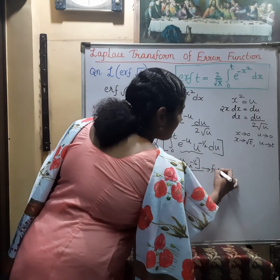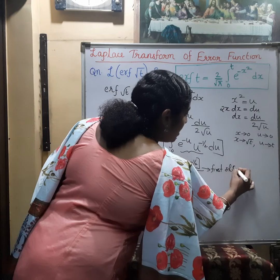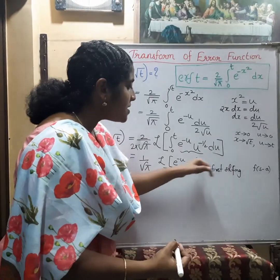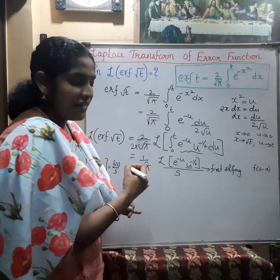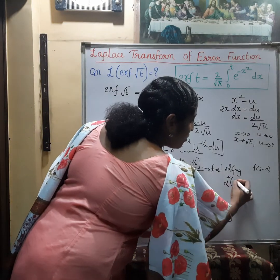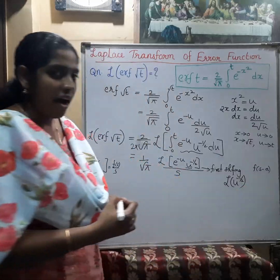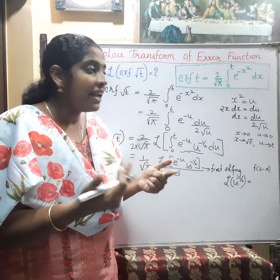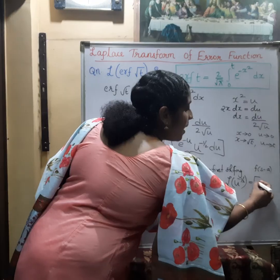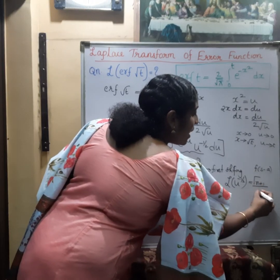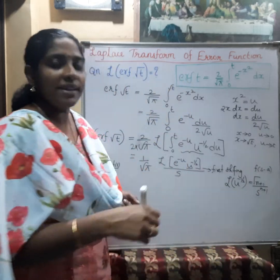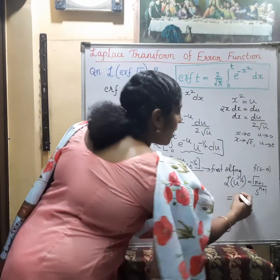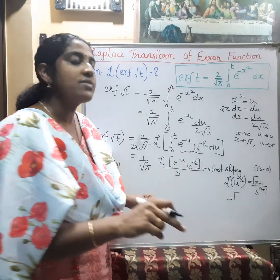By the first shifting property, the answer is f(s minus a). Here, f(s) is the Laplace transform of u raised to minus half. For a function u raised to n with a fractional power, the Laplace transform is gamma(n+1) divided by s raised to n+1. Here n equals minus half, so n plus 1 equals half. Therefore, the Laplace transform is gamma(1/2) divided by s raised to half, which is root pi divided by root s, since gamma(1/2) equals root pi.